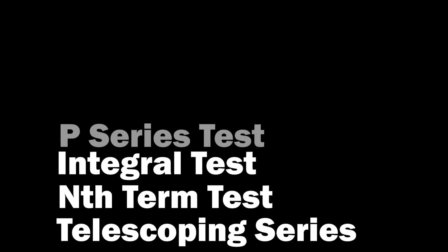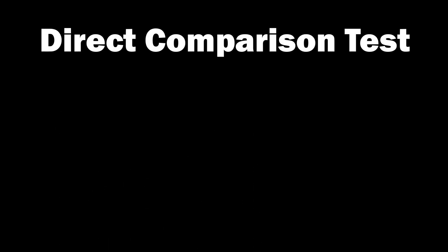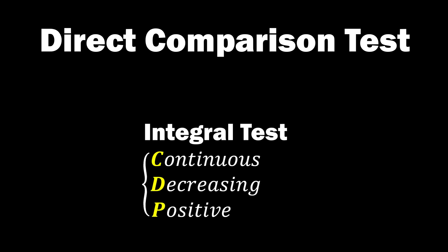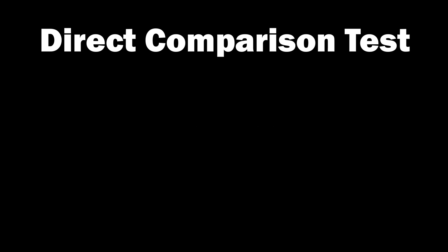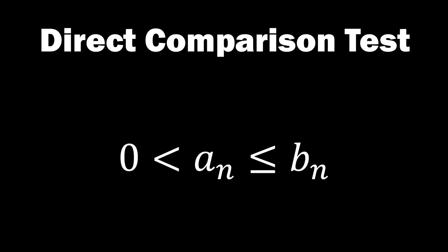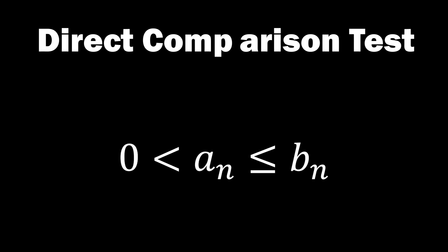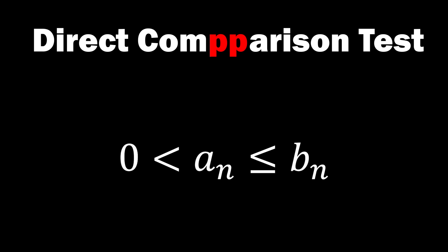Following our previous lesson, today we will delve into the direct comparison test. Similar to the integral test covered in the last class, the direct comparison test also requires certain conditions to be met. To make it easy to remember, let's add another p here and put two red p's. Each p signifies positivity, indicating that both a_n and b_n we'll be using must be positive.